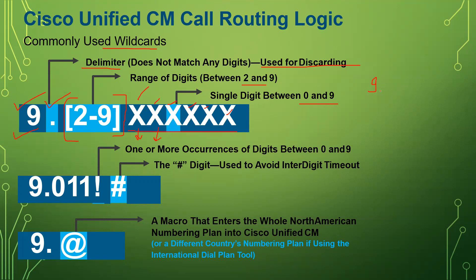So if we make a number through this pattern: we have nine, then dot, then [2-9] — let's say we take six — then six X's where each can be any digit like 1, 2, 3, 4, 5, 8. This bracket [2-9] takes one digit, and the nine is for the outside call. Once we make this pattern, we can discard the pre-dot in the call party transformation.